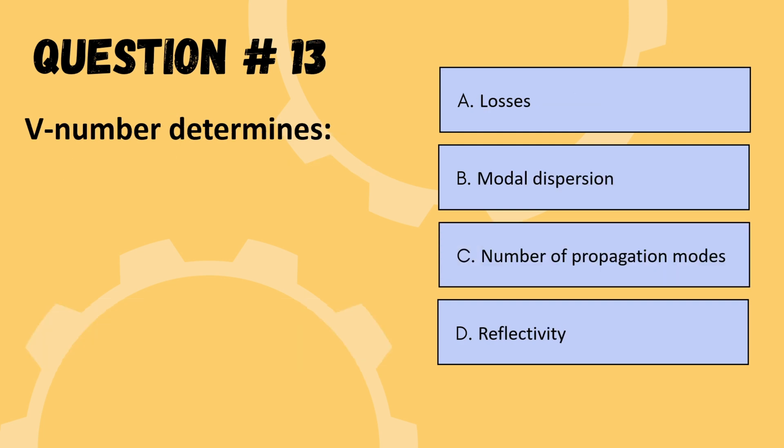Next question: V number determines — options are losses, modal dispersion, number of propagation modes, or reflectivity. The correct option is C: number of propagation modes.